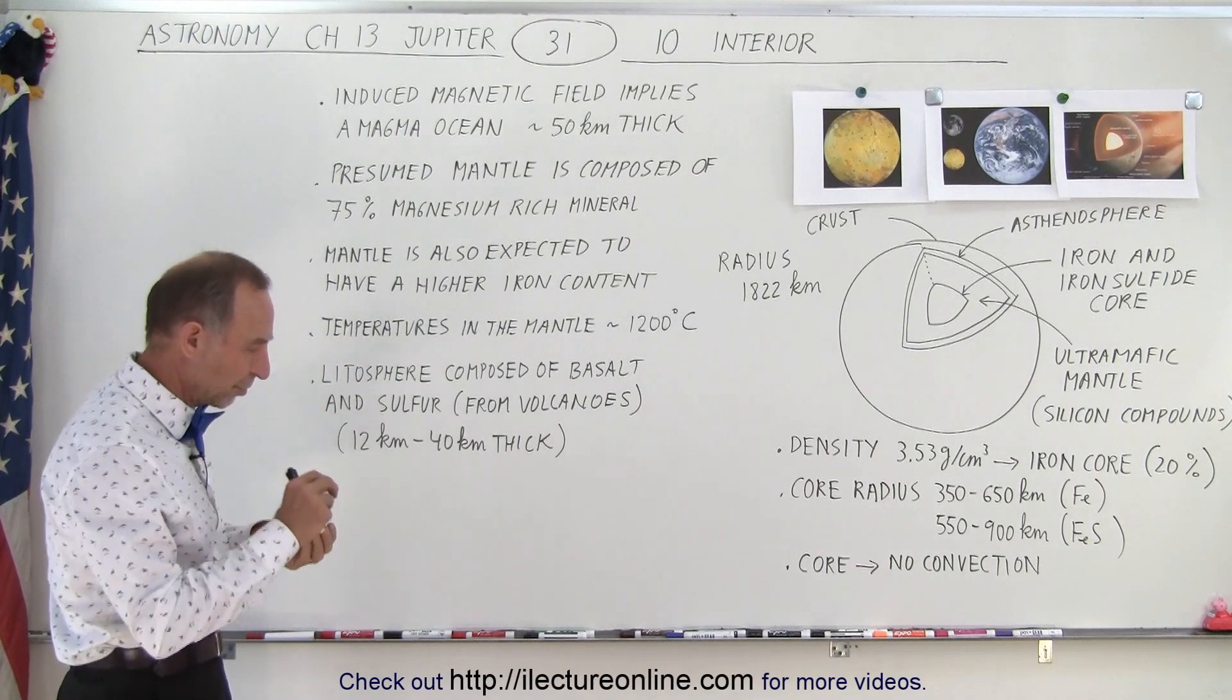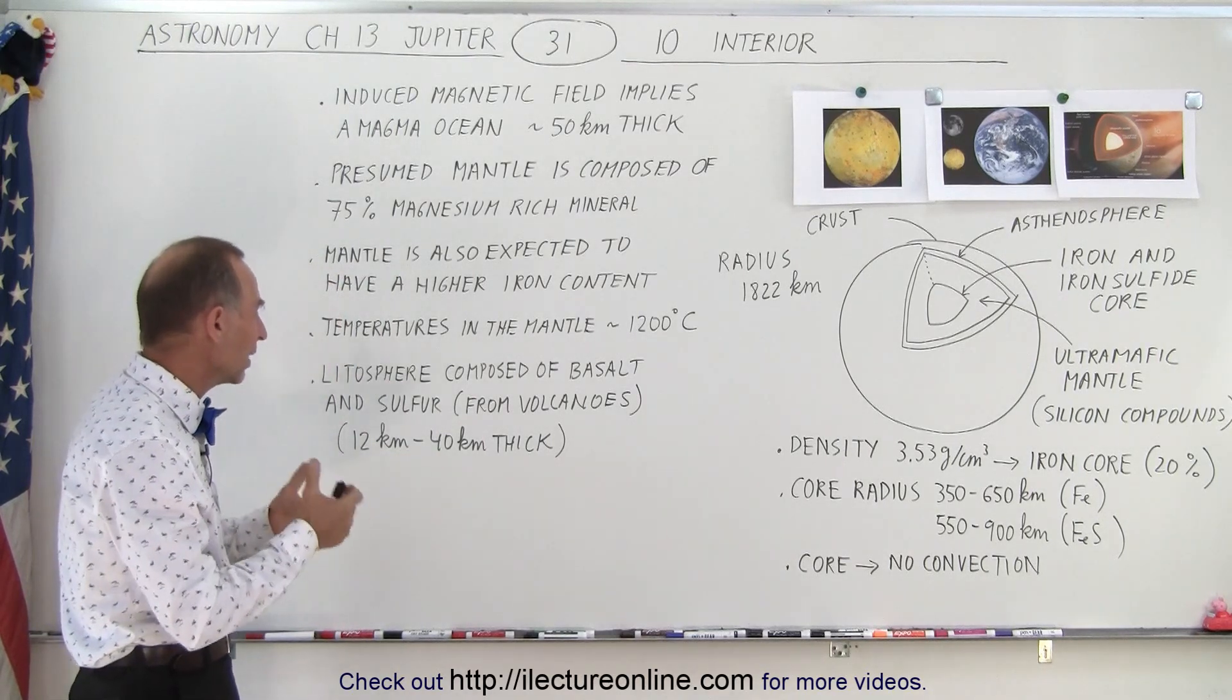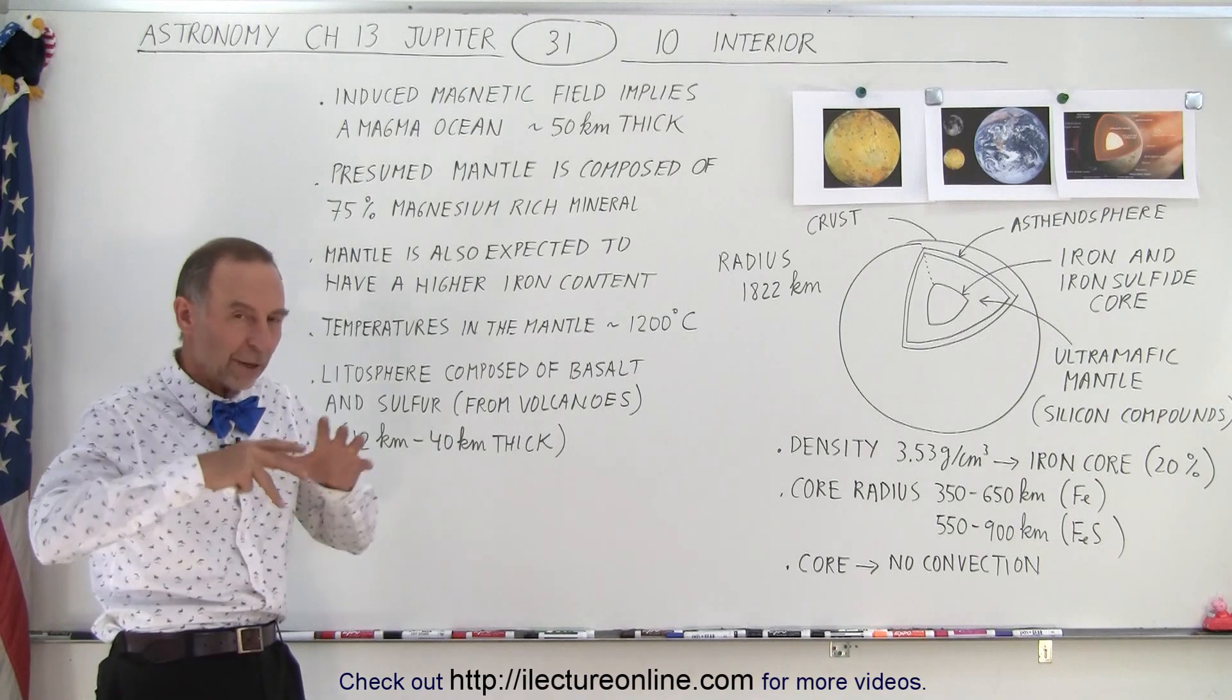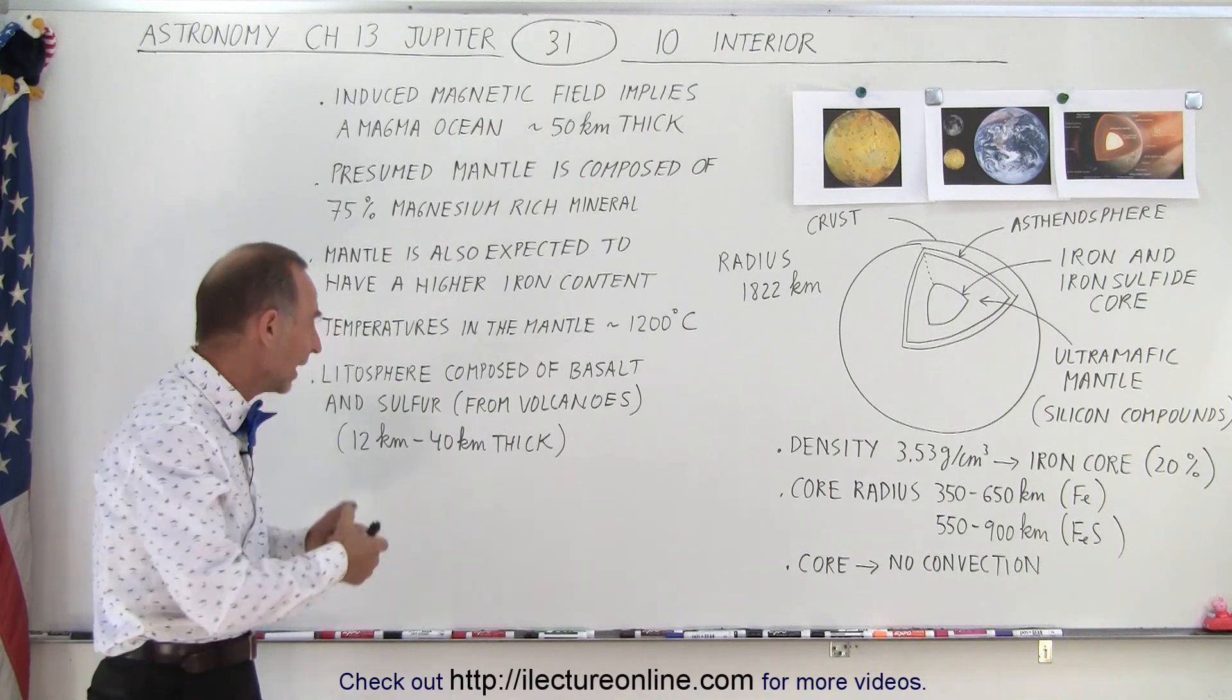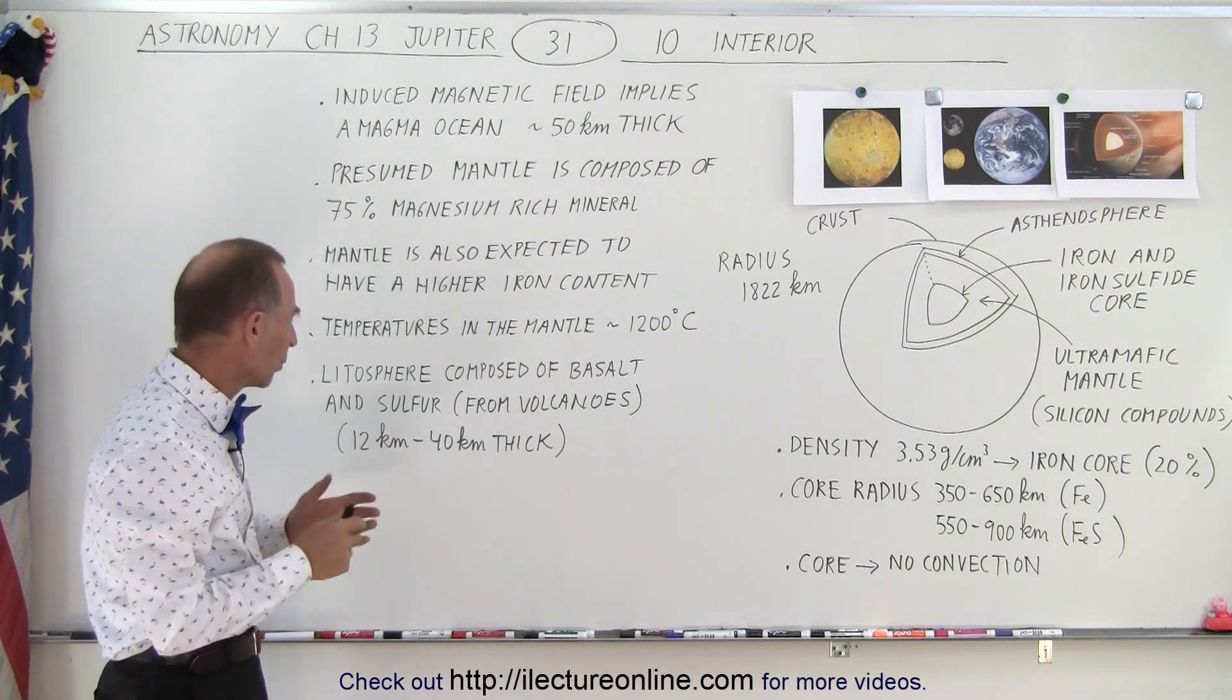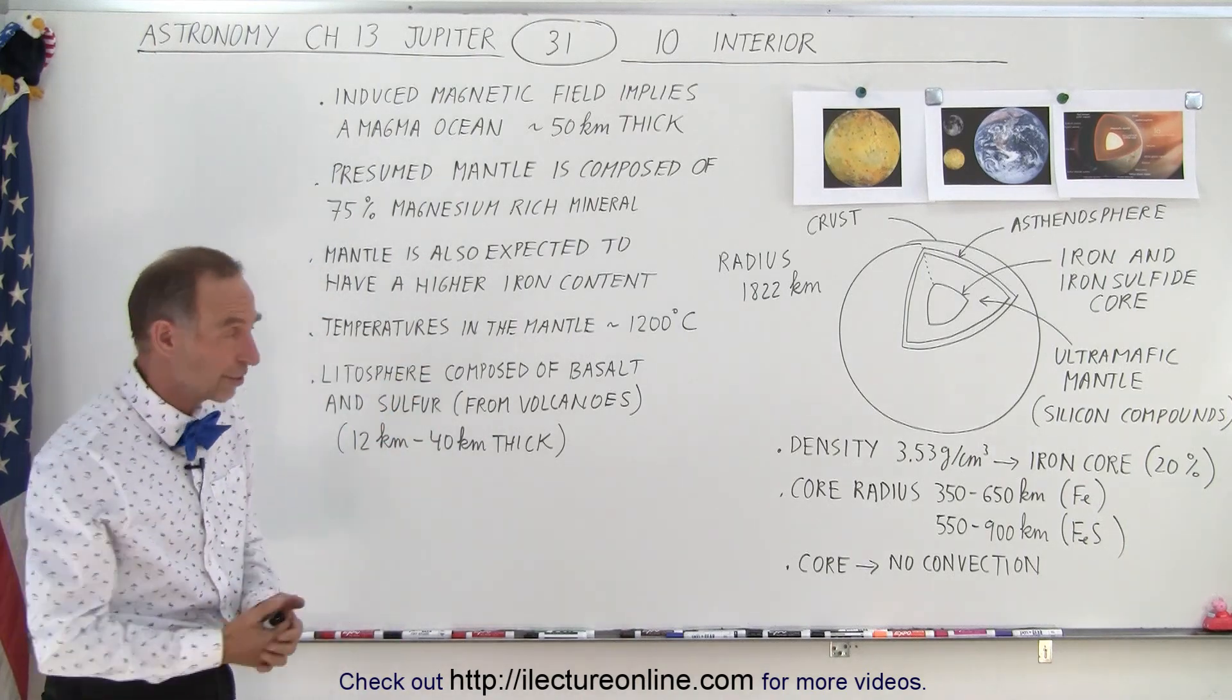The lithosphere, which is the region between the mantle and the crust, is believed to be somewhere between 12 and 40 kilometers thick, and we believe there's a lot of basalt and sulfur within that region. That is surmised because there's such an enormous amount of volcanic activity that would take some of the silicate materials and turn them into basalt. There's also a lot of sulfur on the surface, and we expect that the crust and the lithosphere below it would be made partially of that basalt and of that sulfur compound that has been erupting on the surface probably for billions of years now.